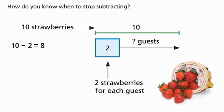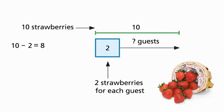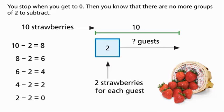How do you know when to stop subtracting? You stop when you get to zero. Then you know that there are no more groups of two to subtract.